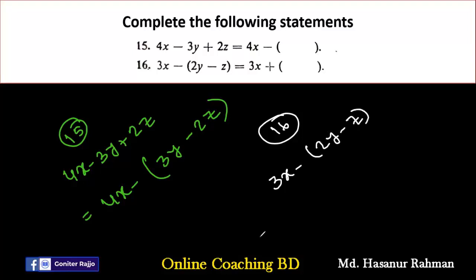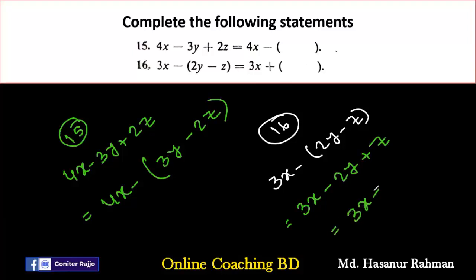Number 16 says: 3x minus 2y minus z. Looking at the question, we need the answer in the form 3x plus a bracket. First simplify: 3x minus into 2y gives minus 2y, minus into minus z gives plus z. Rewriting: 3x plus z minus 2y. Then after plus we add a bracket; the signs are unchanged: 3x plus (z minus 2y).